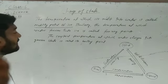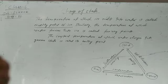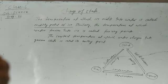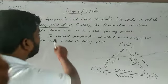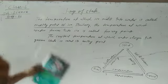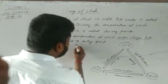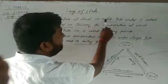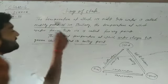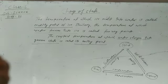The constant temperature at which water changes into a gaseous state is called the boiling point. So: ice melts into water — melting point; water freezes into ice — freezing point; water changes into gas — boiling point.